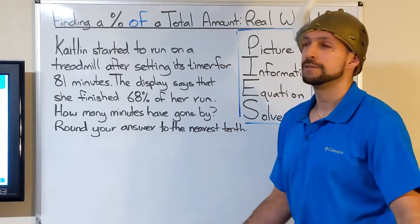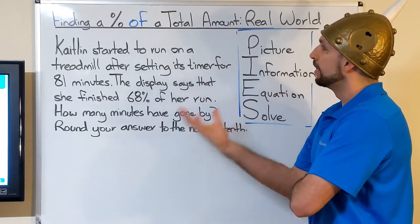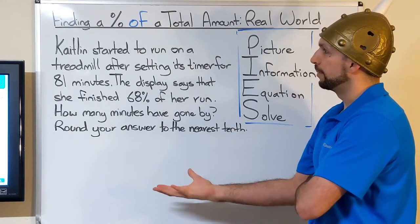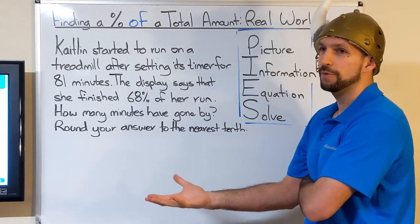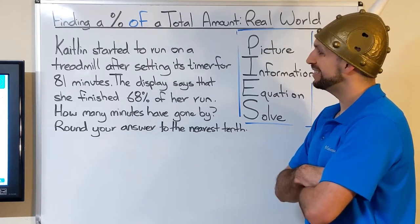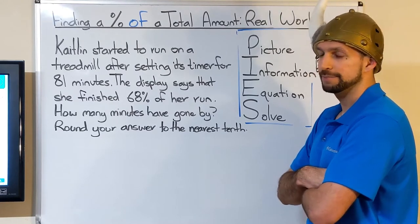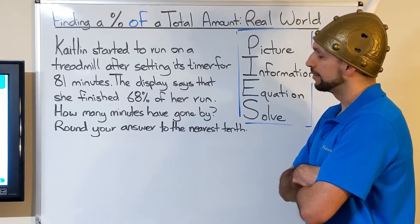So first I'm going to read this and draw a picture. Caitlin started to run on a treadmill after setting its timer for 81 minutes. Ambitious. The display says that she finished 68% of her run. How many minutes have gone by? Round your answer to the nearest tenth.